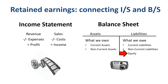Why is retained earnings on the credit or right-hand side of the balance sheet? Two ways to think about that. One, you owe retained earnings to the shareholders, and the right-hand side of the balance sheet is an overview of what a company owes. Two, if you are profitable as a company, you grow the assets quicker than the liabilities. Therefore you need to plug an amount in equity to make the balance sheet balance.